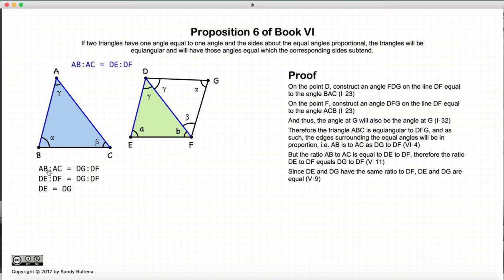Now, since DE to DF equals DG to DF, we can in turn just remove this bit. And we have that DE is equal to DG. Proposition 9 of Book 5.